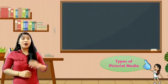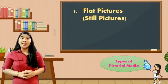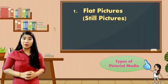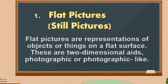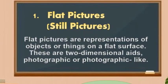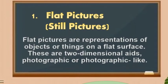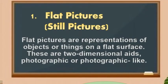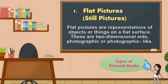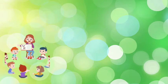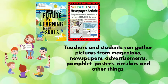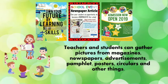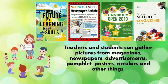The first type of pictorial media are flat pictures, or they can be called still pictures. Flat pictures are a representation of objects or things on a flat surface. These are two-dimensional aids. Teachers and students can gather pictures from magazines, newspapers, advertisements, pamphlets, posters, circulars, and other things.